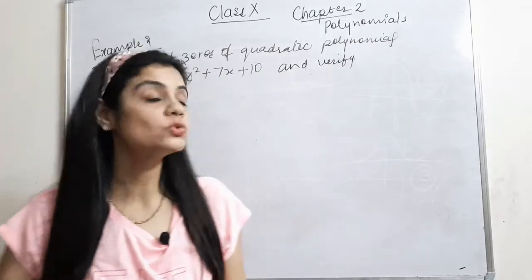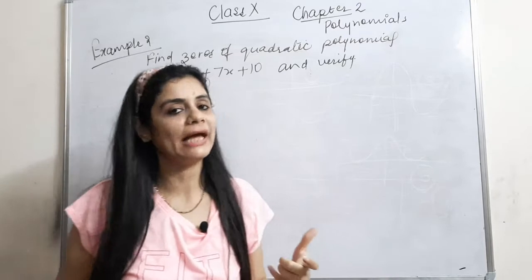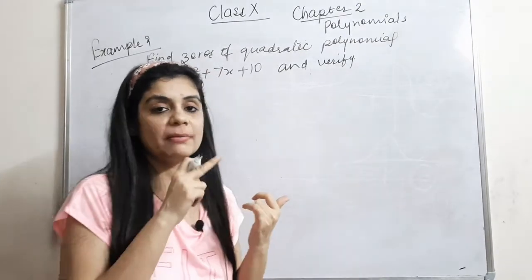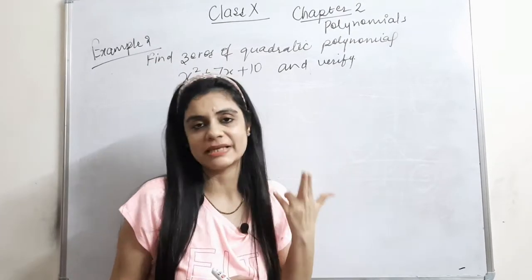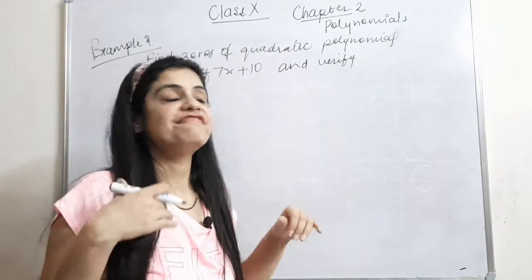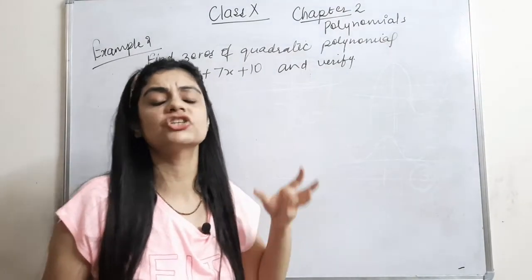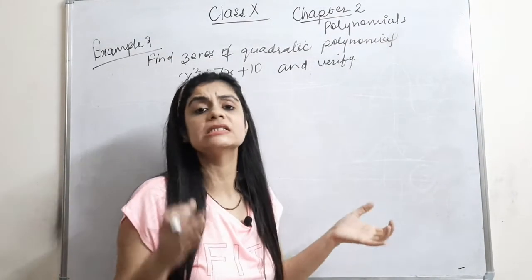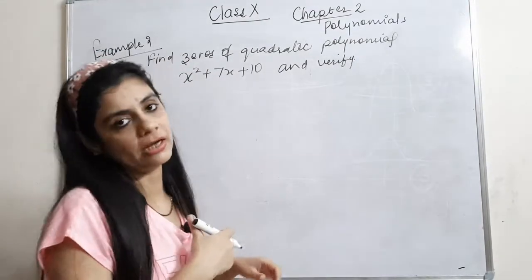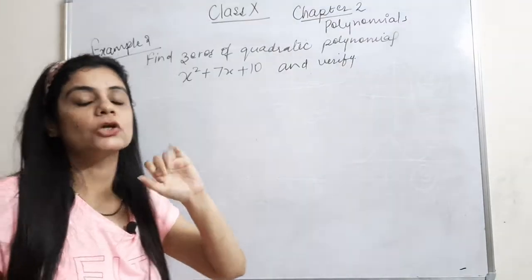Example number 2 says: find the zeros of the quadratic polynomial. A quadratic polynomial has degree 2, which means it has two zeros. We need to find those zeros and then verify the relationship between the zeros and its coefficients.